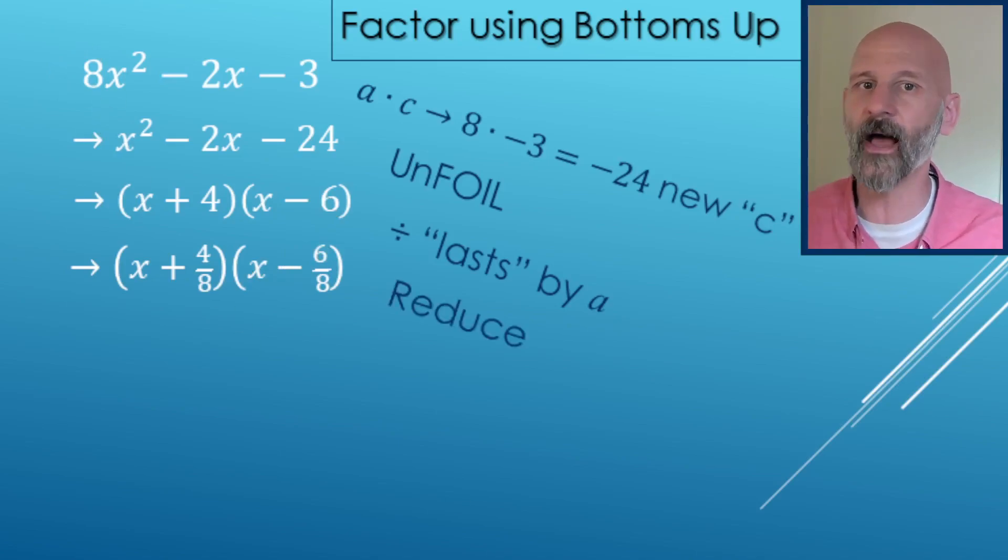Now reduce. Simplify that type of thing. So instead of a four over eight, that reduces to a one half, divide them both by four. Here, these are both even. We can divide them both by two and reduce that to make three over four.